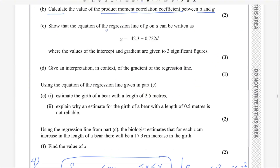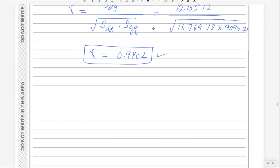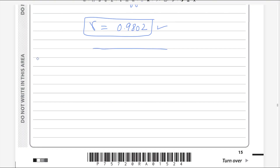For the next part, show that the equation of the regression line of g on d can be written as given. You need to prove this answer. First of all you should know the basic regression line equation. You should memorize that formula in terms of x and y because these values are given in terms of x and y in the formula sheet — then replace x with d and y with g. It will be easier to avoid mistakes. The regression equation of y on x is: y equals a plus bx. We can make the formula for g on d: g equals a plus bd.